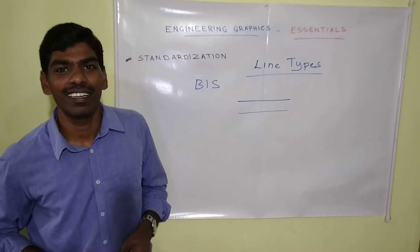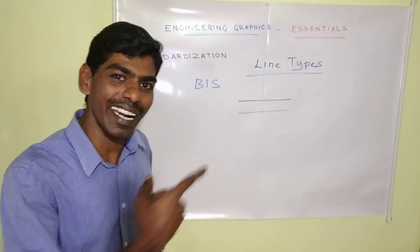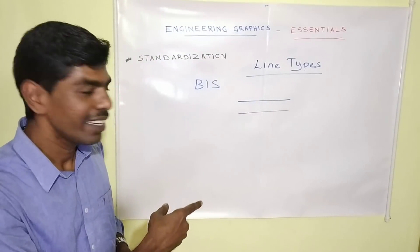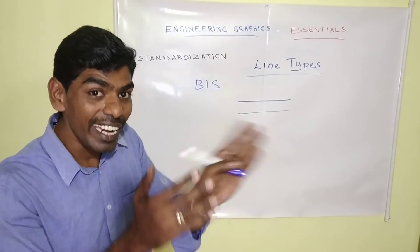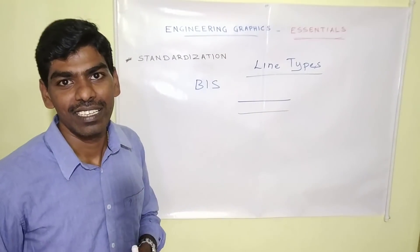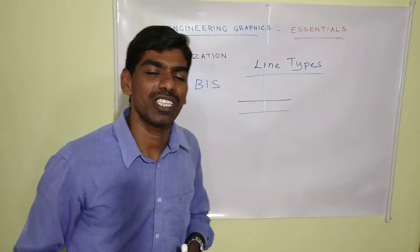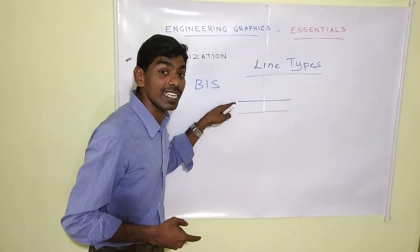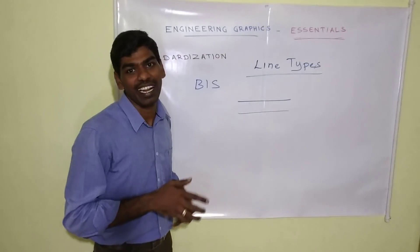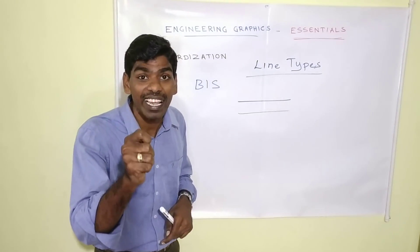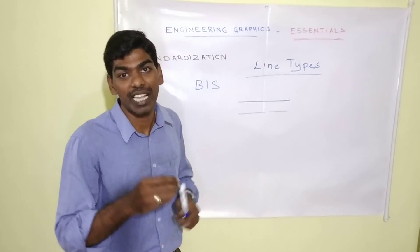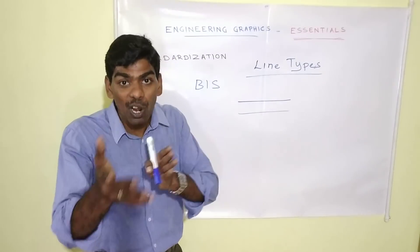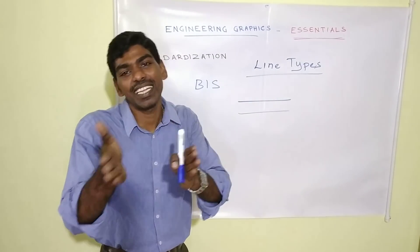We have two straight lines here. What is the difference between these two? They are varied by thickness. This is a thick continuous line and this is a thin continuous line. We have to be very clear about the line types that we use for effective communication. If we use anything in the wrong way, that will give a misunderstanding.